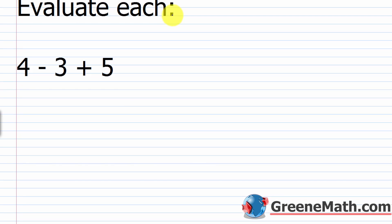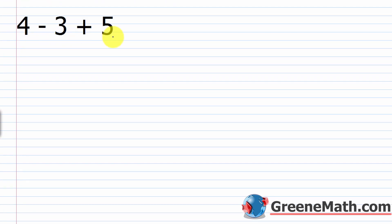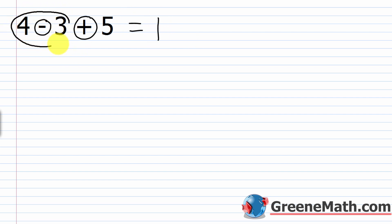Let's evaluate some problems — just find the value. First: 4 minus 3 plus 5. We have subtraction and addition, which are on the same level, so we work left to right. We do 4 minus 3 first, which is 1, then we add 5. So 1 plus 5 equals 6.